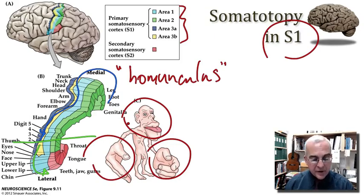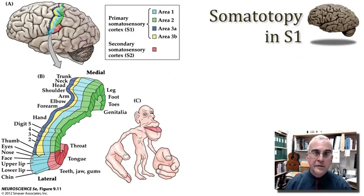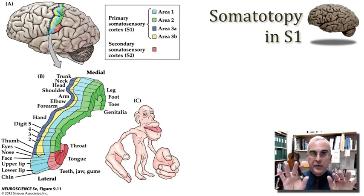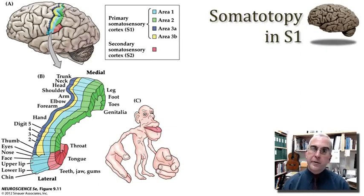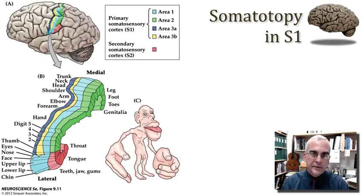The homunculus makes very clear that the important somatic sensory surfaces for us as humans are our hands and our face — especially the facial structures around the mouth and the tips of our fingers. Before we leave the primary somatic sensory cortex, I want to comment on the functions of these four parallel body maps. There do seem to be distinctive receptive field properties represented in these four different maps of the body.